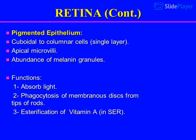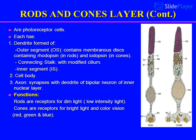Retinal pigmented epithelium: cuboidal to columnar cells arranged in a single layer, with apical microvilli and an abundance of melanin granules. Functions: 1. Absorb light, 2. Phagocytosis of membranous discs from the tips of rods, 3. Esterification of vitamin A.